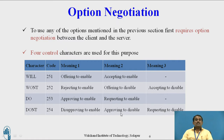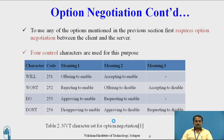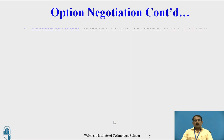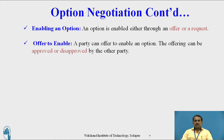How these characters work in detail, we will study in the next video. This is the NVT character set for option negotiation. The first concept is enabling an option — an option is enabled either through offer or request.